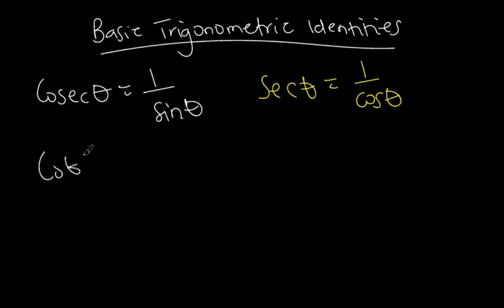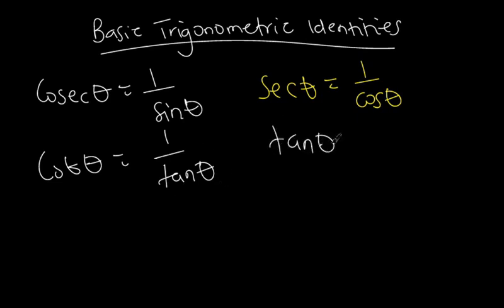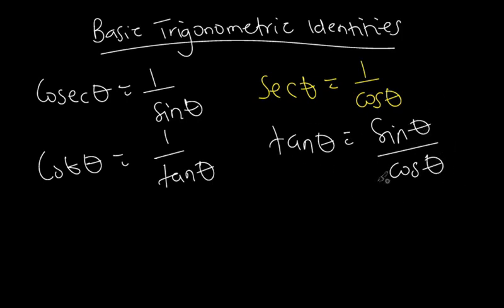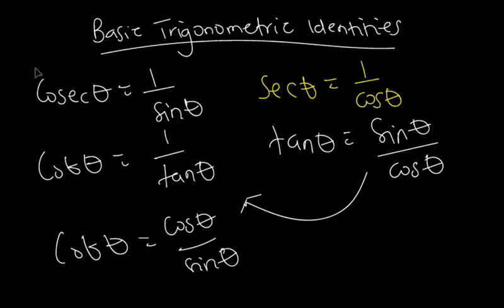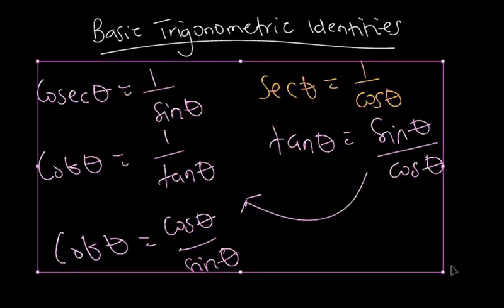Cot theta is equal to cos theta over sin theta. Tan theta is equal to sin theta over cos theta. So if we substitute back, cot theta is the reverse of tan theta — cos theta divided by sin theta. These identities are also very useful when we want to solve trigonometric equations or prove cases in trigonometry.